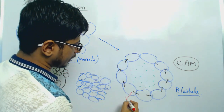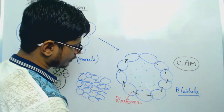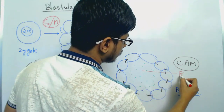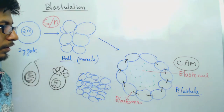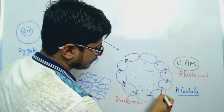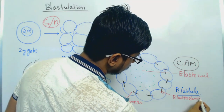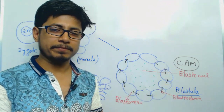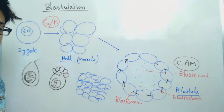In the structure of blastula, the individual cells are known as blastomeres. The center fluid-filled cavity is known as the blastocoel. The layer of cells forming and covering the blastocoel is known as the blastoderm. These are the three regions of a blastula.